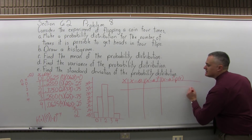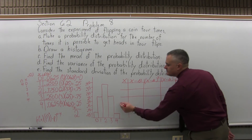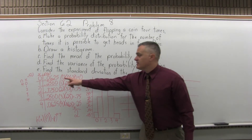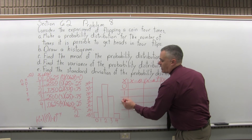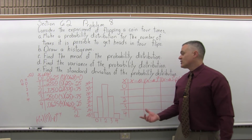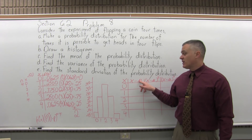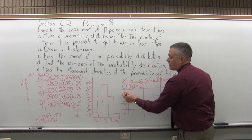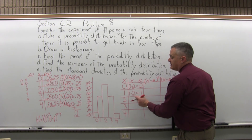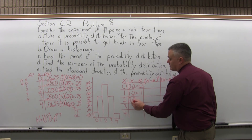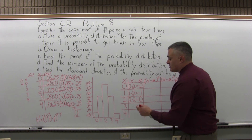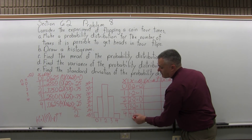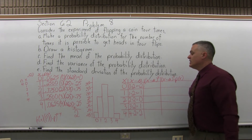The column labeled x is simply 0, 1, 2, 3, 4. For the next column, from every value of x I subtract the mean, which for this problem was 2. So: 0 minus 2 is negative 2; 1 minus 2 is negative 1; 2 minus 2 is 0; 3 minus 2 is positive 1; and 4 minus 2 is positive 2. That takes care of the second column.